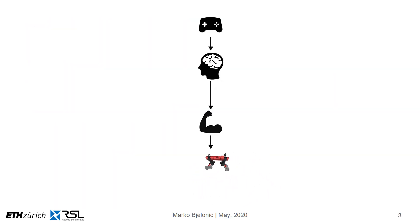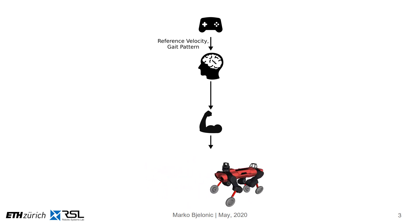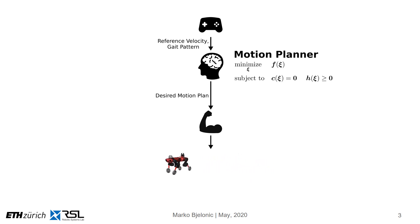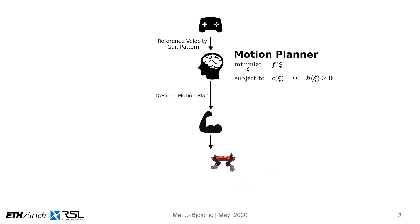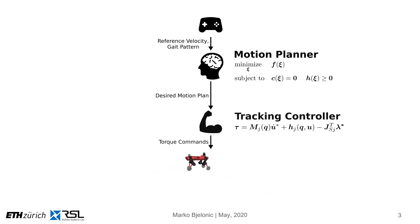How are we able to create motions as shown here in the lower part of the image? First, we are sending reference velocities from a joystick or a high-level planner. Similarly, a gait pattern is fixed beforehand. The motion planner generates trajectories that minimize a non-linear function F, subjected to non-linear equality and inequality constraints. Given a motion plan, we present a novel whole-body controller that tracks these trajectories by sending torque commands to the real robot.